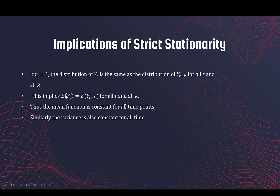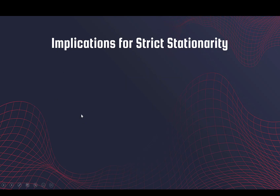Similarly, the variance will also be the same because the expectations are the same — or basically because the joint distributions are the same, all of the moments are the same. So the second moment is also the same, which implies that the variance will be constant as well.